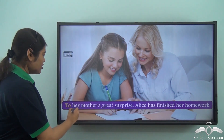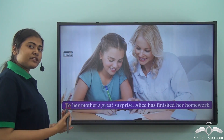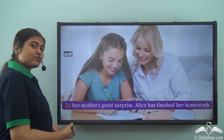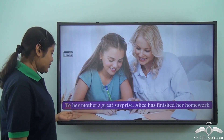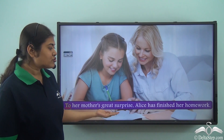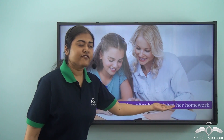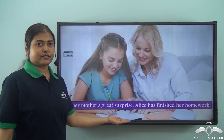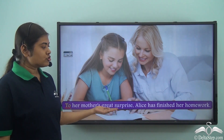To her mother's great surprise, Alice has finished her homework. Here 'to' is the preposition and it has been used at the beginning of the sentence — the preposition can also be used at the beginning, not necessarily in the middle. Here 'to' is telling us her mother's reaction towards a certain action. The action is Alice finishing her homework, and the reaction is that her mother is greatly surprised. So 'to' links that reaction to the action.